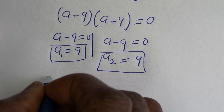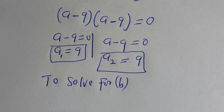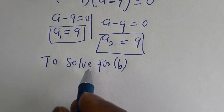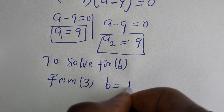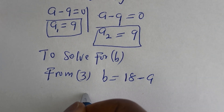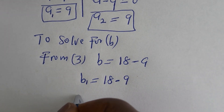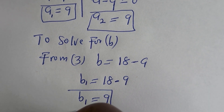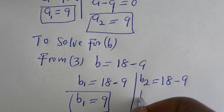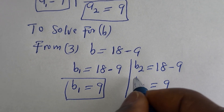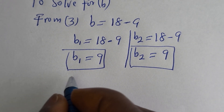Now we have the value of A. To solve for B, from equation 3, B equals 18 minus A. B1 equals 18 minus 9, so B1 equals 9. Also B2 equals 18 minus 9, so B2 equals 9. You can see that using the substitution method and the quadratic general formula, we get the same answer.